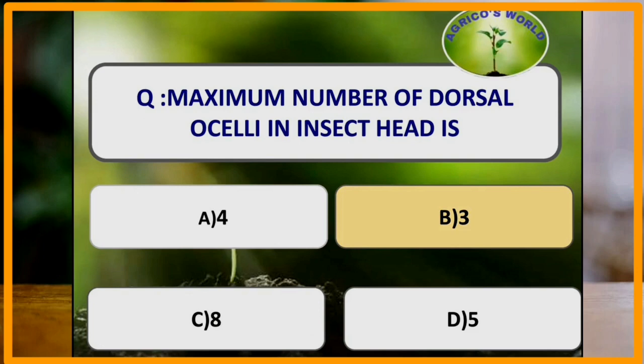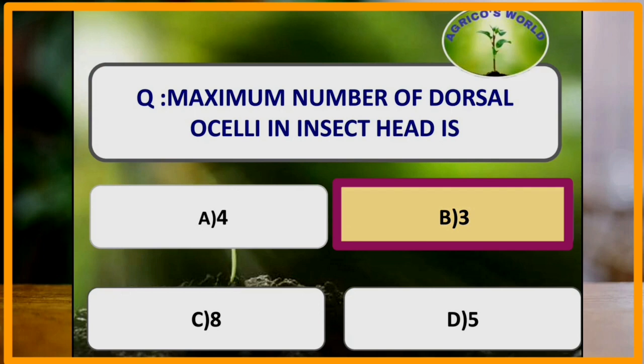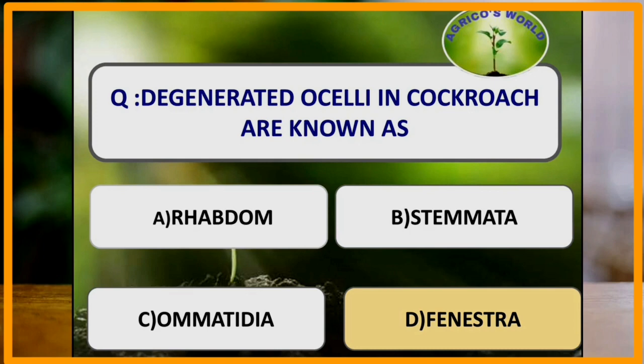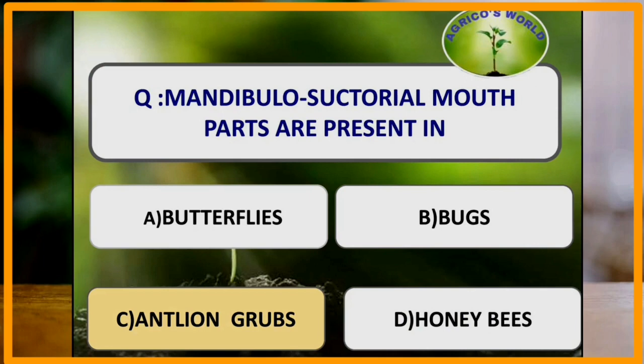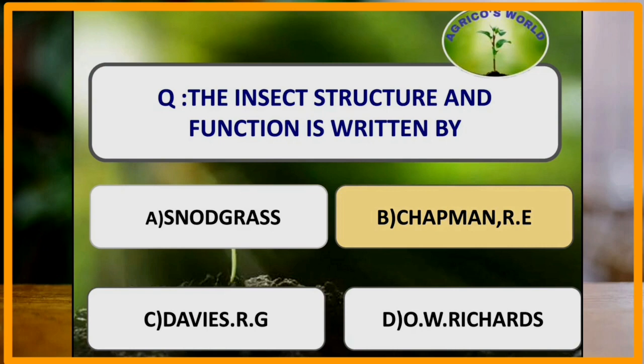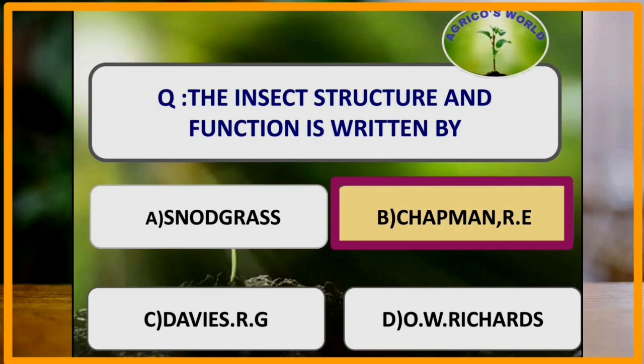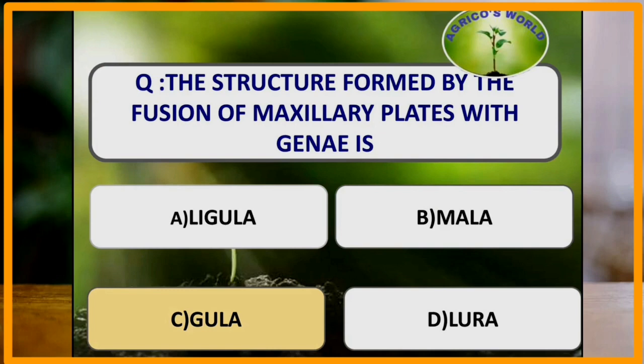Maximum number of dorsal ocelli in the insect head are 3. Degenerated ocelli in cockroach are known as fenestra. Fenestra are the degenerated ocelli present in cockroach. Mandibulo-suctorial mouthparts are present in antlion grubs. The book Insect Structure and Function is written by Chapman. The structure formed by the fusion of maxillary plates with the gena is called gula.